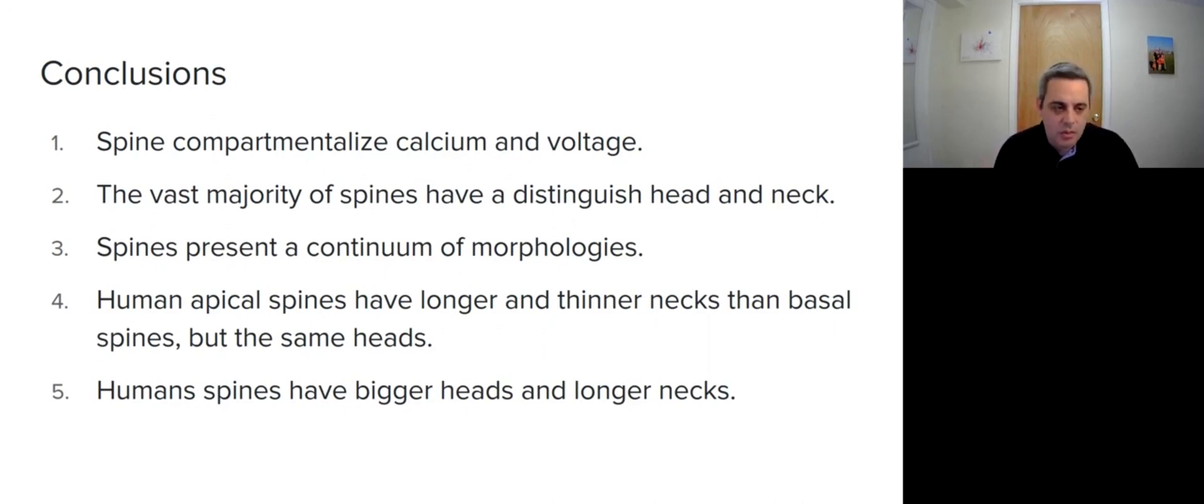In the confocal microscopy study, we saw that human apical spines have longer and thinner necks than basal spines, but the same distribution of heads. Finally, we showed that human spines have bigger heads and longer necks. Thank you for listening.